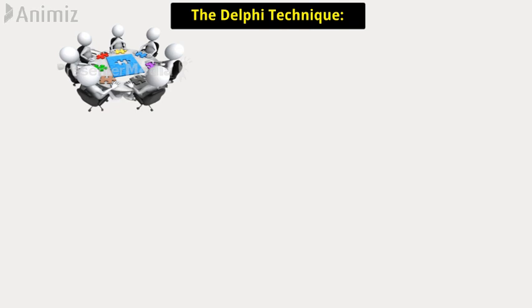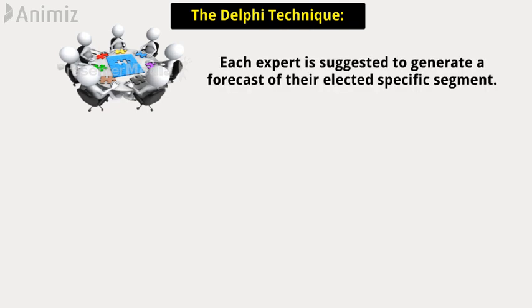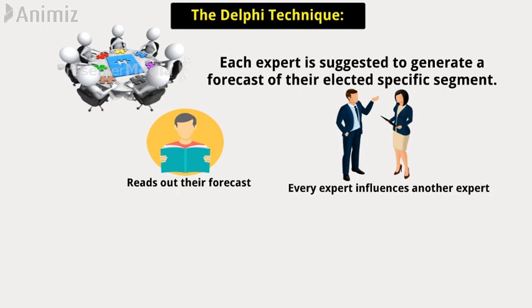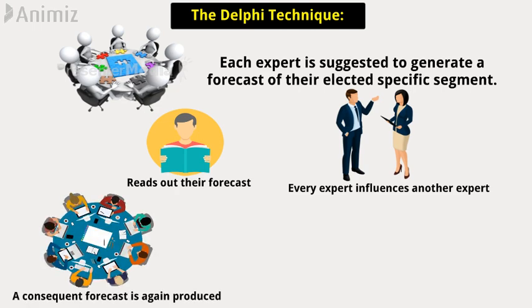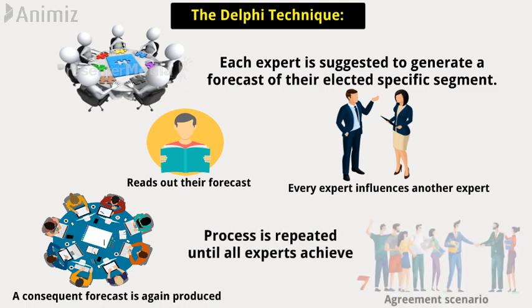The Delphi technique: A group of experts is appointed to produce a demand forecast. Each expert is asked to generate a forecast for their elected specific segment. After the initial forecasting round, each expert reads out their forecast, and every expert influences another expert. A consequent forecast is again produced by all experts, and the process is repeated until all experts achieve a near-agreement scenario.